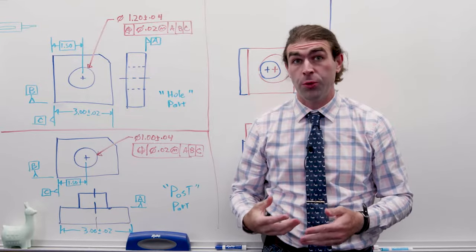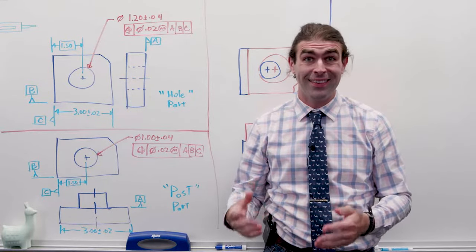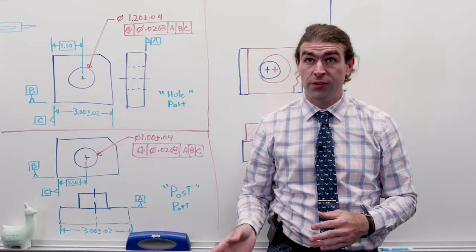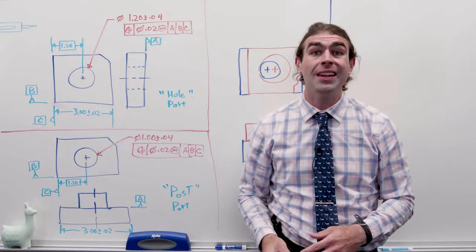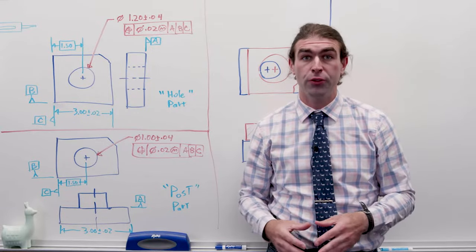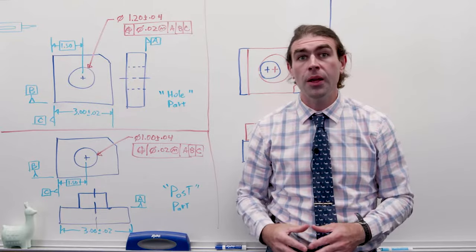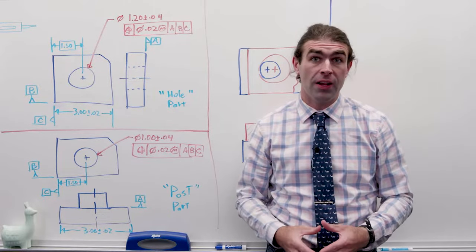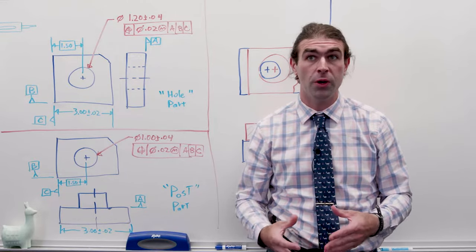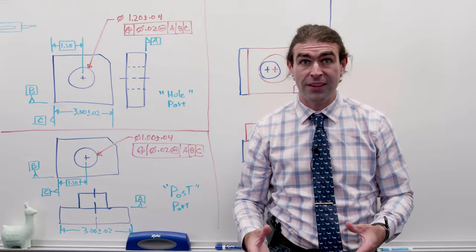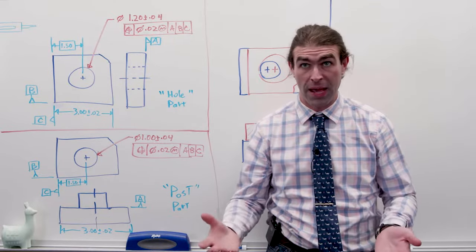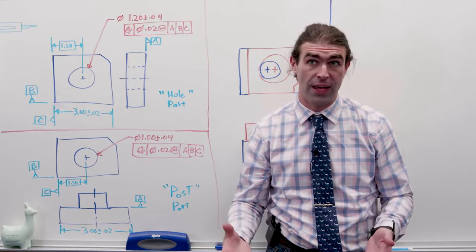In this video, I'm going to show you how to do a tolerance stack-up with a simple assembly using the vector method. In the previous video, I talked about how to calculate inner and outer boundaries, and these can be used to figure out if two parts will fit together. But what I'm going to show you here is how to figure out the shift between the parts — inner and outer boundary calculation or a boundary analysis won't give you that.